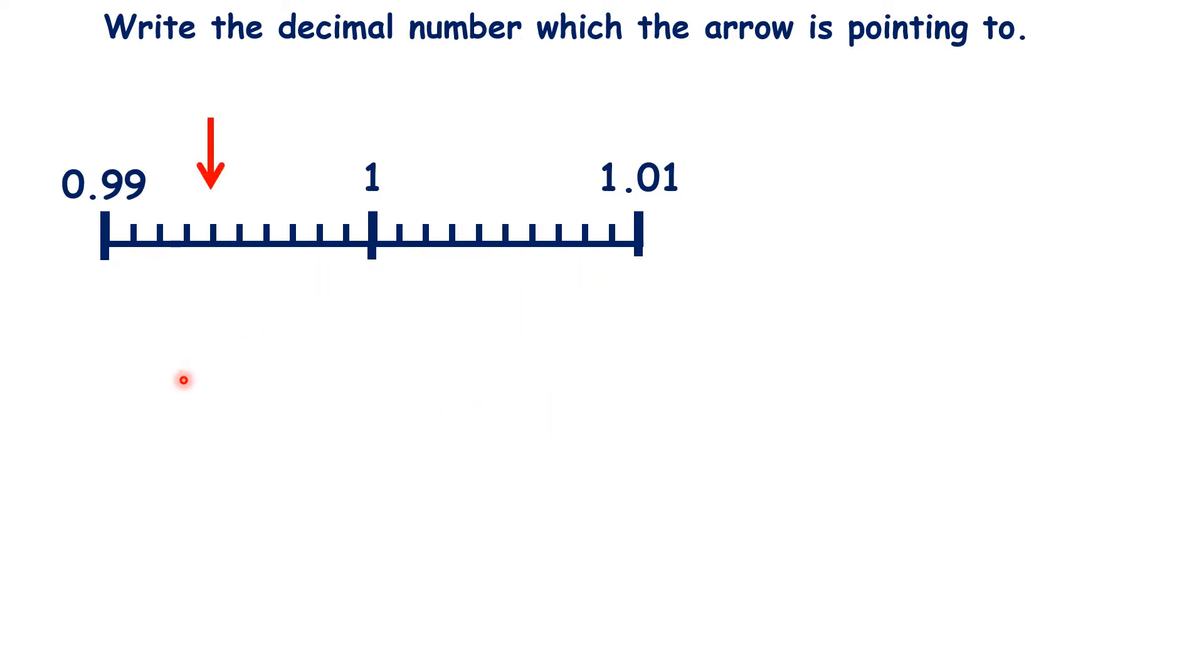So this number line here is much more confusing, but I'll show you how we can still use the same trick in a moment. We have 0.99, 1, and 1.01 labeled. So that's going up in hundredths.